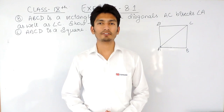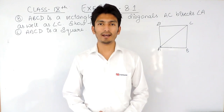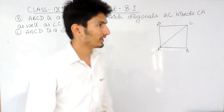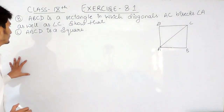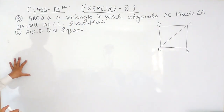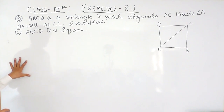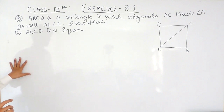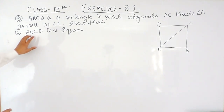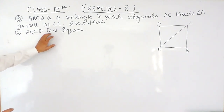Hello everyone, we are from TrueMaths and in this video we are going to solve the first part of the 8th question. The question says: ABCD is a rectangle in which diagonal AC bisects angle A as well as angle C. You have to show that ABCD is a square.